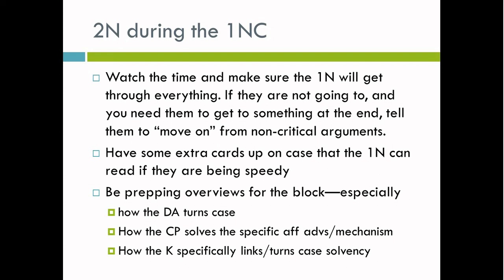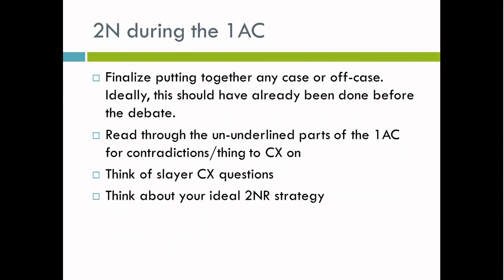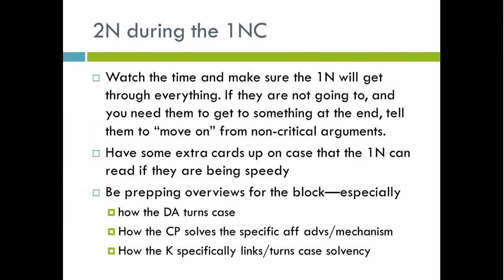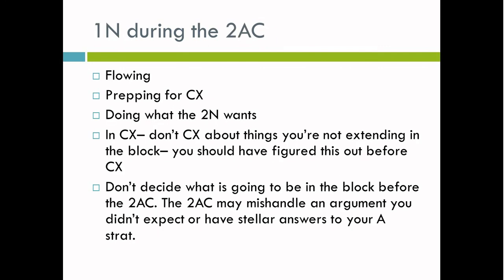You should also have extra cards ready in case the 1N can read them if they're being especially speedy — sometimes the 1N goes so fast they have extra time, so don't waste it; have them read more cards. You should be prepping overviews for the block: thinking about how the DA turns case, how the counter plan solves specific aff advantages and mechanisms, and how the case specifically links and turns case solvency. During the 1NC I often write up case extensions because I usually send case in the 2NC.